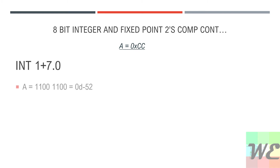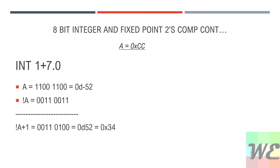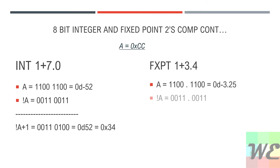In the integer format, we take CC — which is negative 52 — invert it, and add 1. We get decimal 52 or hex 34, which is what we entered the first time. To recover 34 from the fixed-point version, it's the same thing, just with the decimal point in the middle.